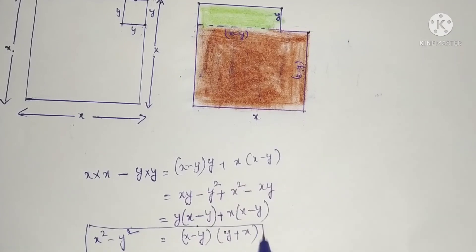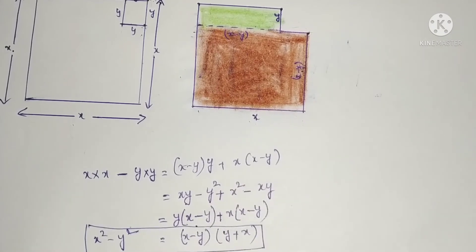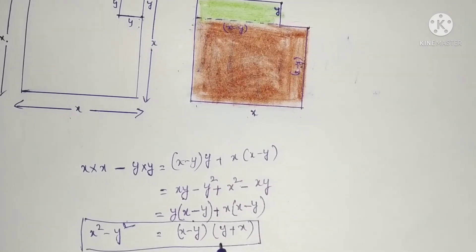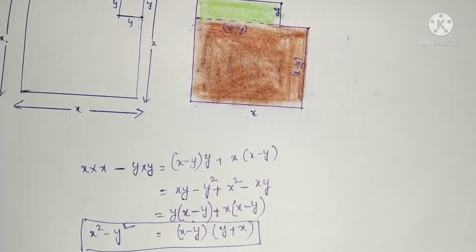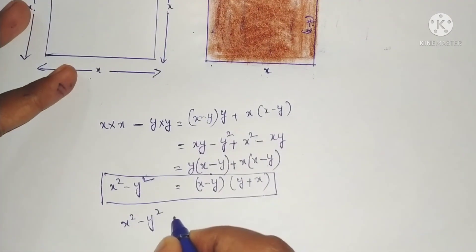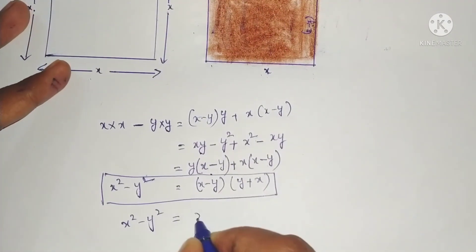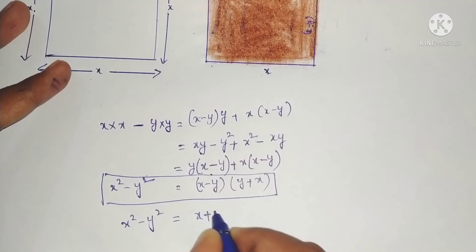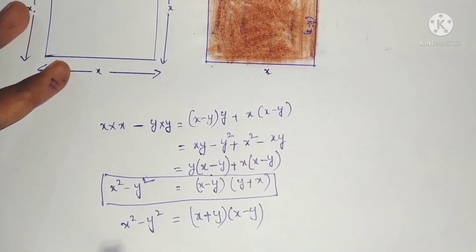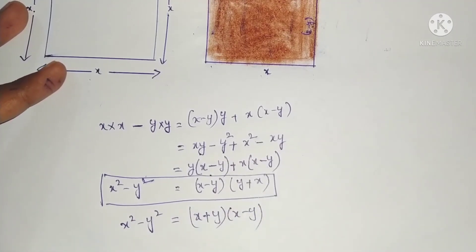So x squared minus y squared is equal to x minus y into y plus x, that is the formula. So x squared minus y squared equals x plus y into x minus y. This is the formula.